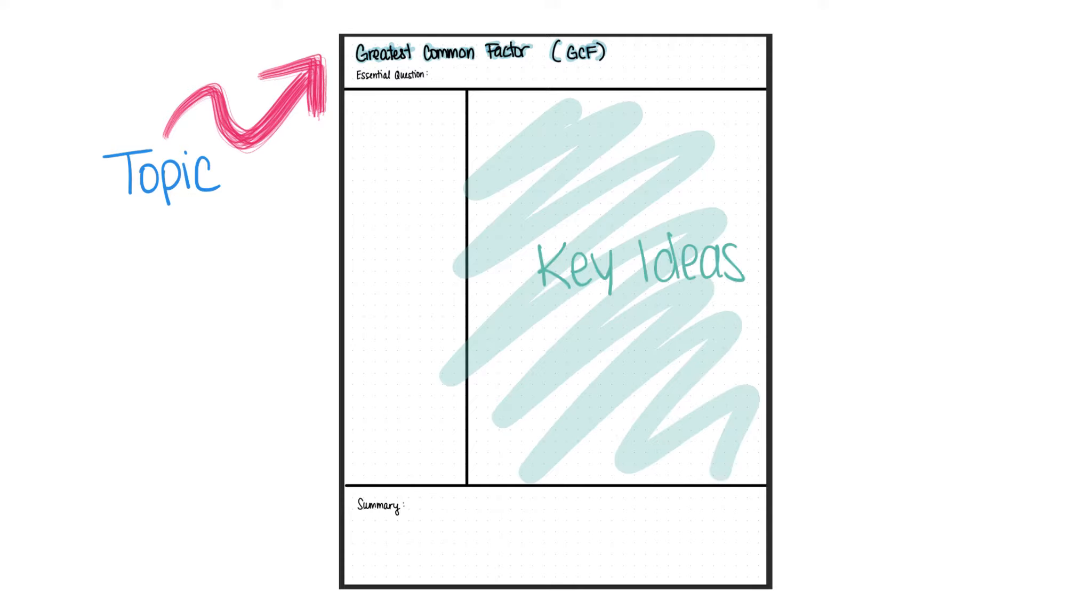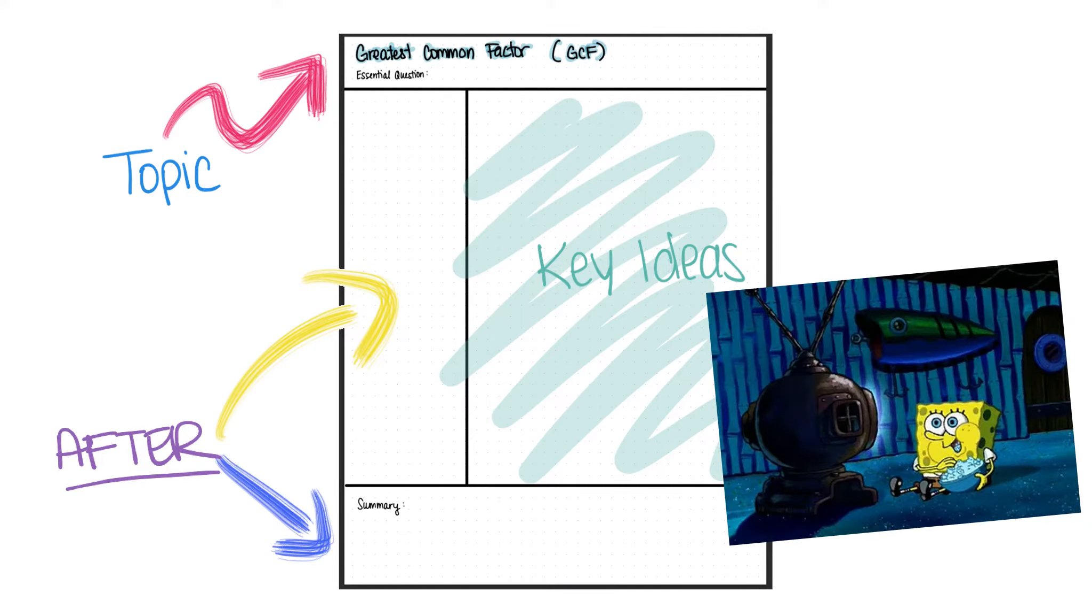Cornell notes have a special template. On the top, I wrote the topic for the video we are going to watch, which is Greatest Common Factor, or the GCF for short. I divided up my page, and the bigger section is where we're going to write the key ideas from the video. We will worry about the side and the summary section after we write our key ideas from the video.